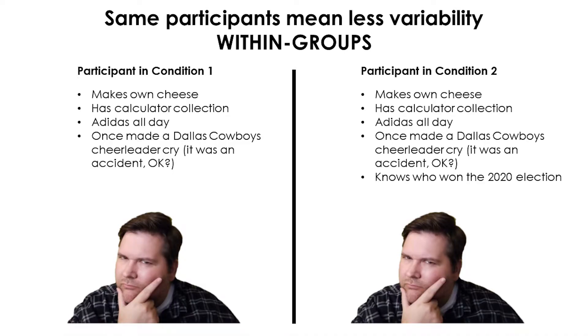Within-groups designs are more sensitive because they have less variability between the conditions. This makes sense because even though people change over time, me now is more similar to me one week from now than another person would be, because I share all but one week of life experience with future me. This means you may not need to recruit as many participants, since each one will be able to participate in all of the experimental conditions, serving as their own baseline.